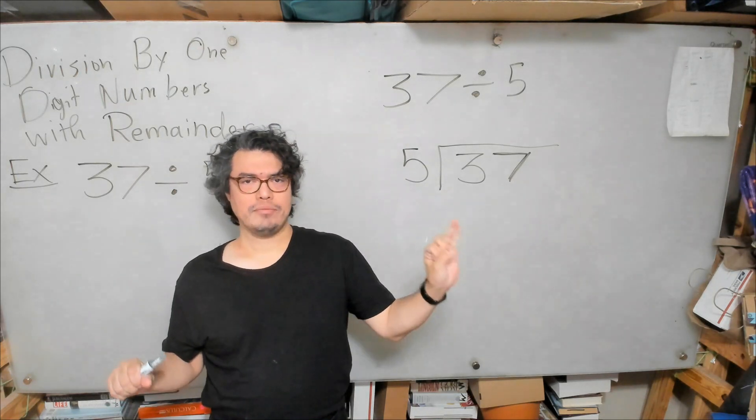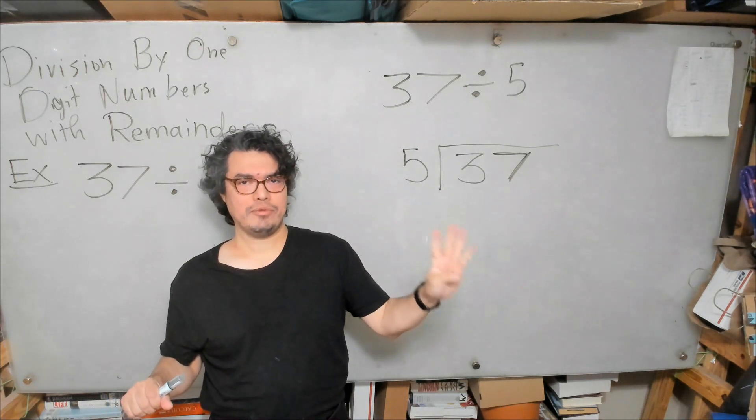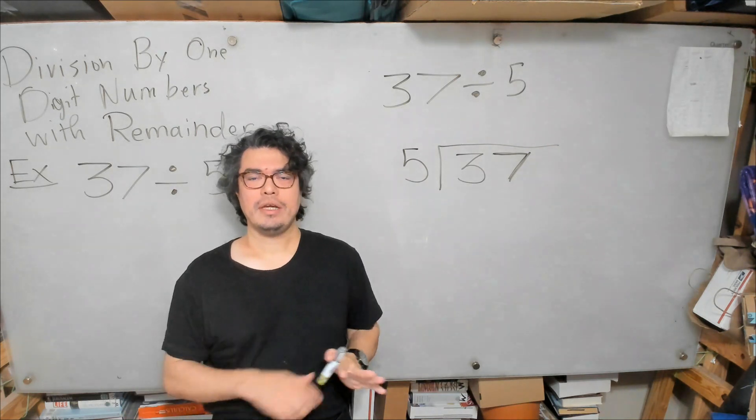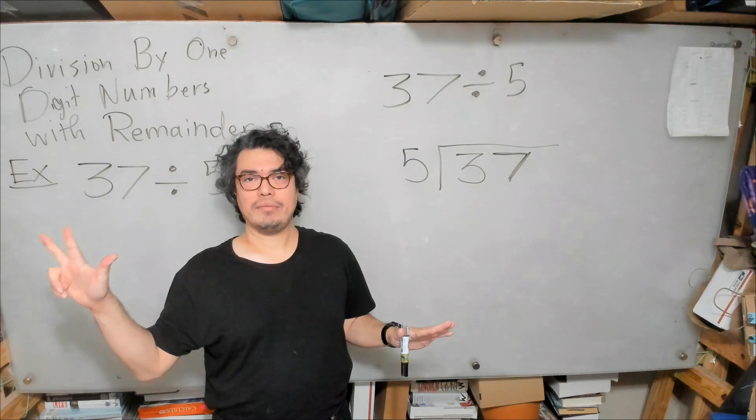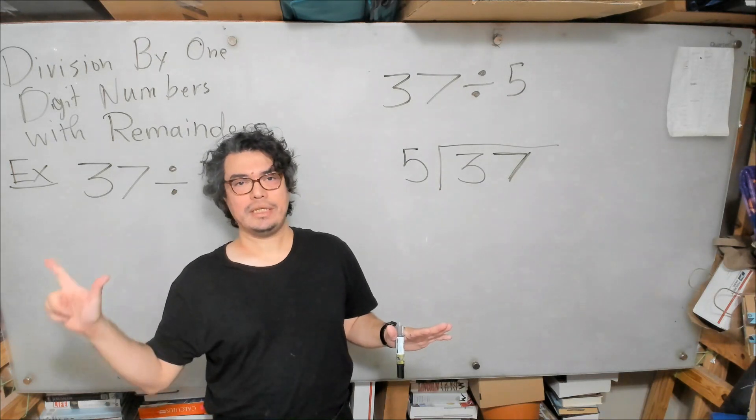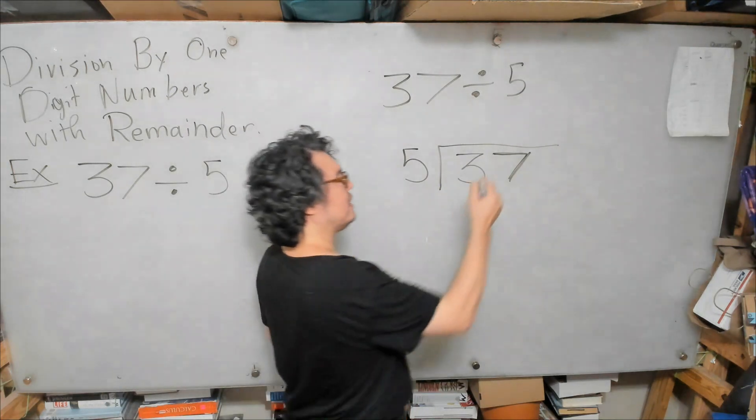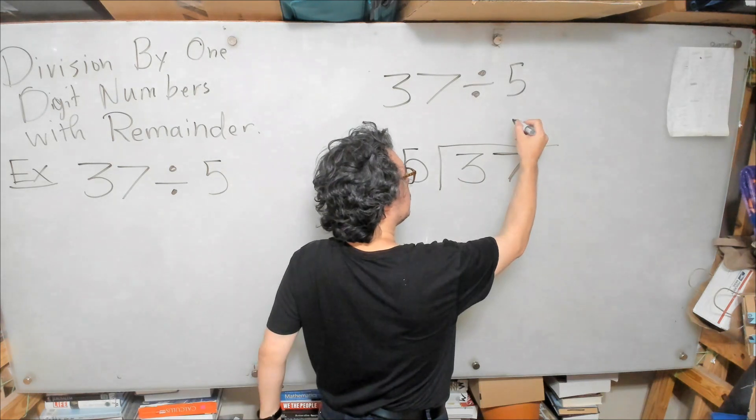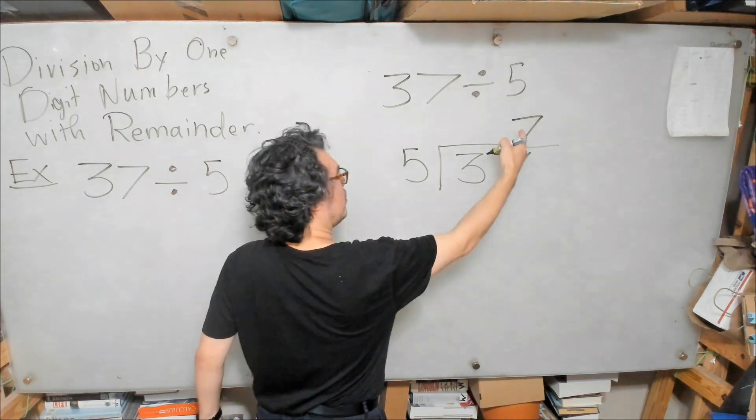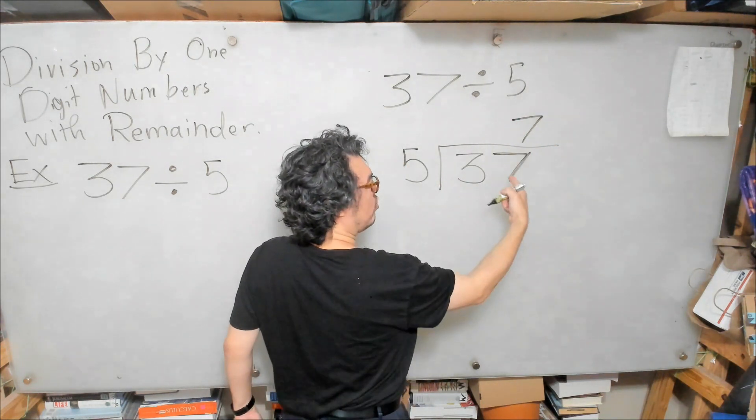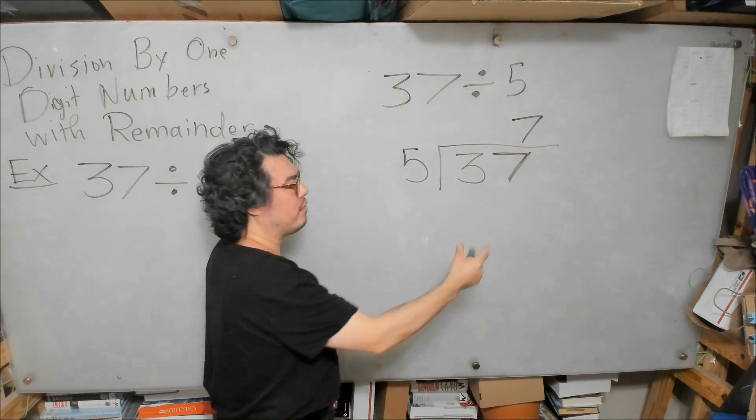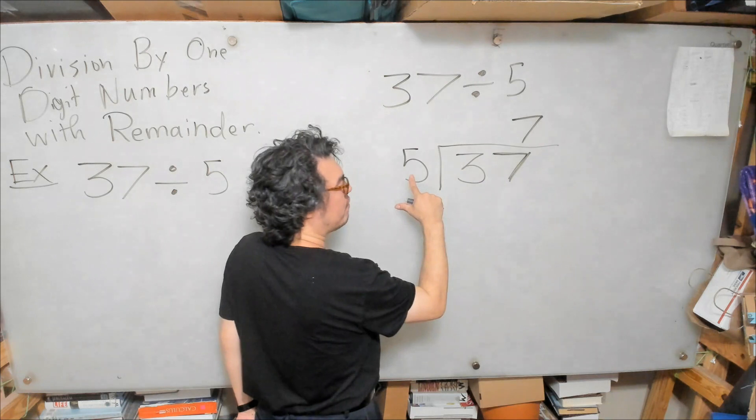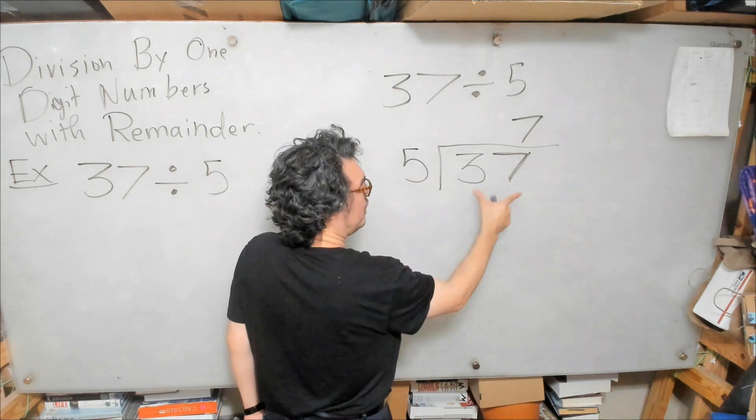5 times 1 is 5, times 2 is 10, times 3 is 15, times 4 is 20, times 5 is 25, times 6 is 30, times 7 is 35, times 8 is 40. So we know it's 7. We place the 7 over the 7 of the 37, because we saw that 7 times 5 is 35. So the 5 fits 7 times into 37.